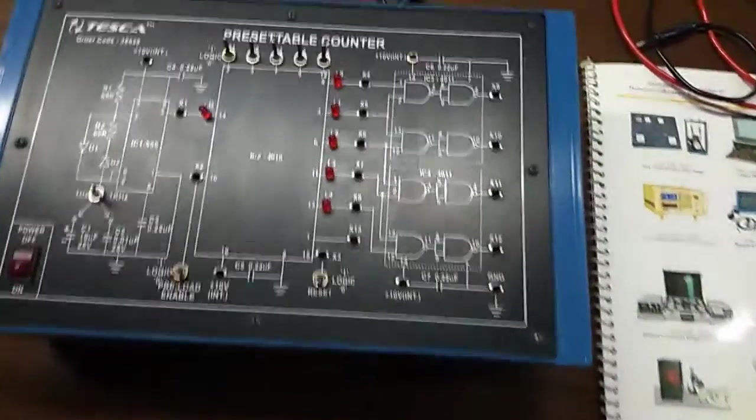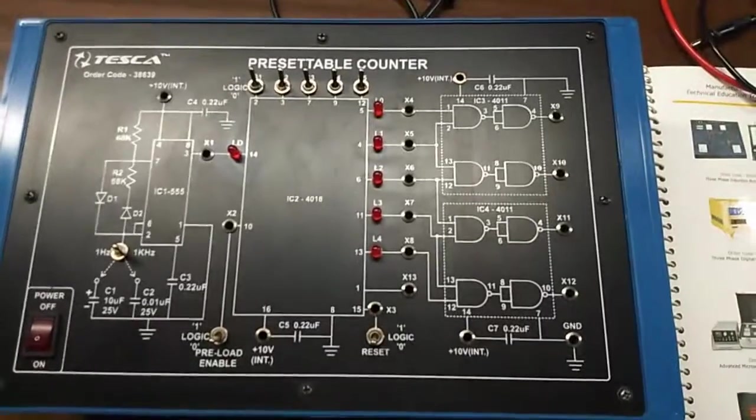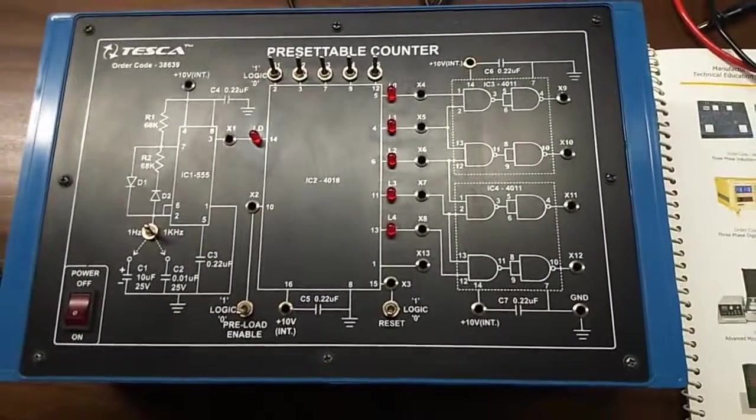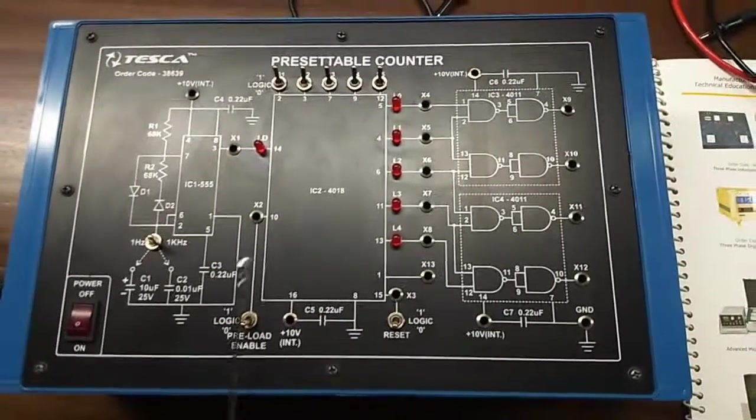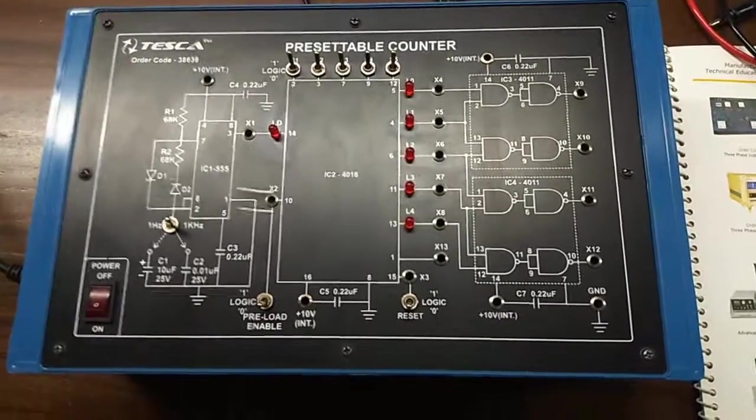Today we are going to show you our presettable counter trainer kit, order code is 38639. So this is the trainer kit, this is the presettable counter IC 4018.